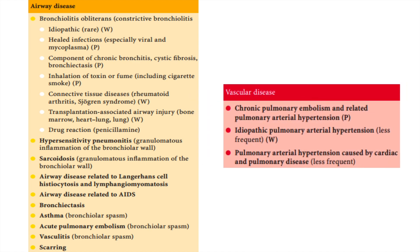The vascular causes include the most common one being chronic pulmonary embolism. The other less frequent ones are idiopathic pulmonary hypertension and pulmonary arterial hypertension caused by cardiac and pulmonary disease.